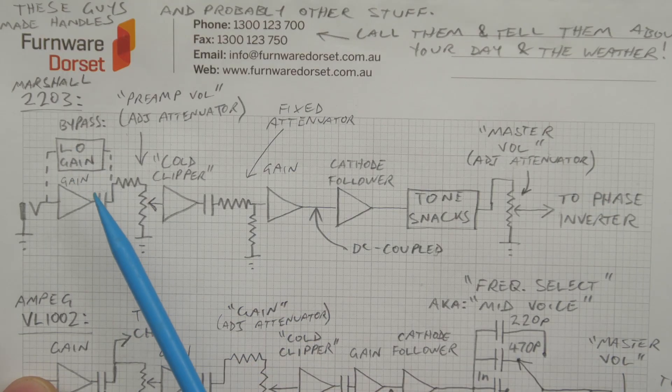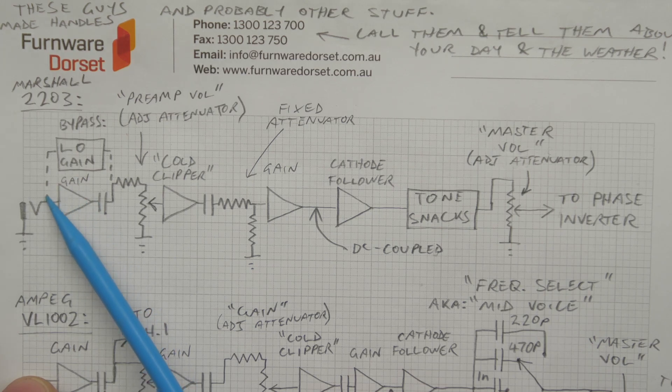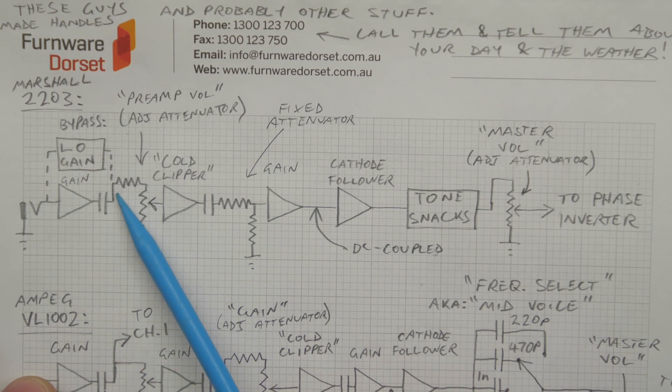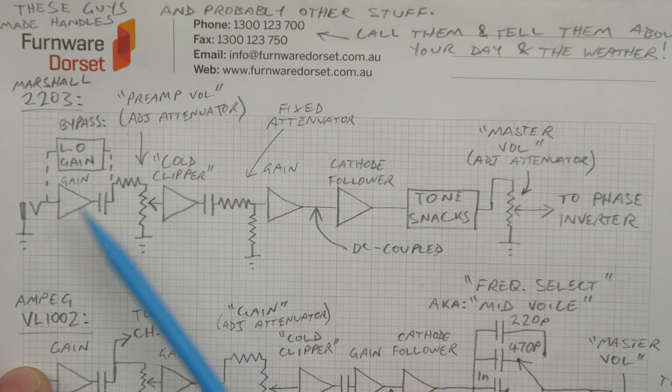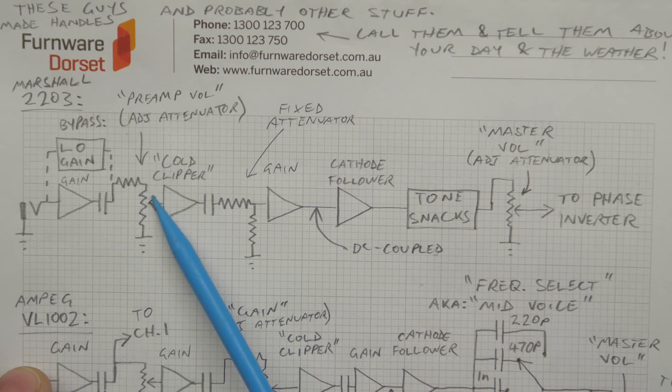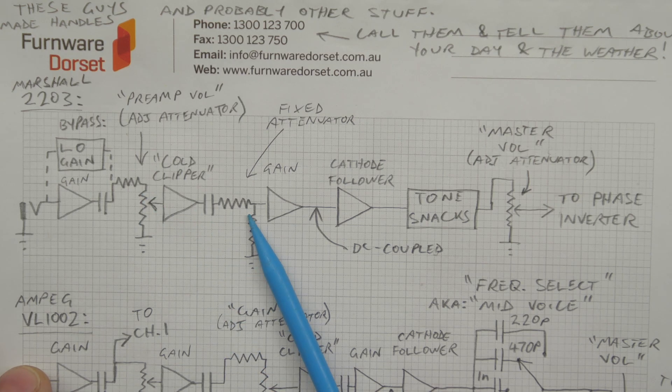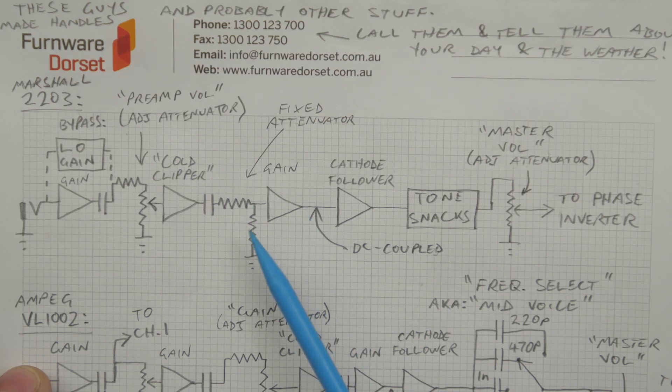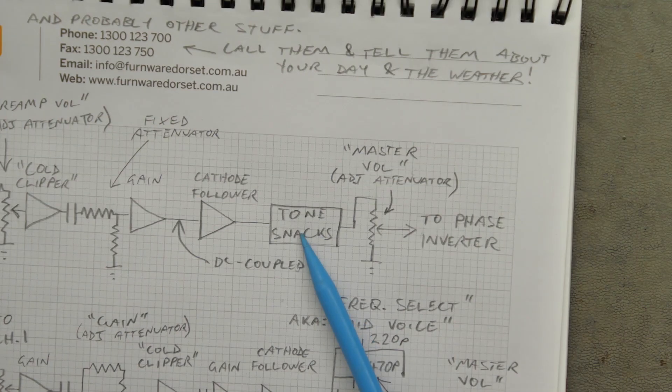Now, your 2203, the typical Marshall and what we're going back to. You've got a gain stage. When you plug into the low input, it bypasses that gain stage. It goes straight to the cold clipper stage. After the gain stage, you've got a, this is in the high gain mode, you've got an adjustable attenuator, essentially, preamp volume. You've got your cold clipper stage, coupling cap. You've got an attenuator, fixed attenuator, just two resistors there and a voltage divider configuration. Another gain stage, DC coupled, cathode follower. Then your tone stack. Then your master volume to phase inverter.